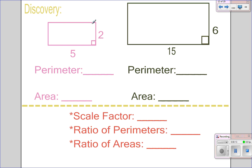So, if you look at this rectangle, the perimeter would be 5 plus 5 plus 2 plus 2, so 14. The perimeter here will be 15 plus 6 plus 15 plus 6, so 42. The area will be 5 times 2 is 10, 15 times 6 is 90.